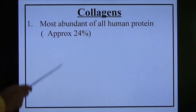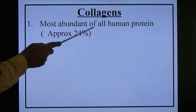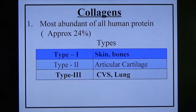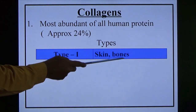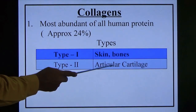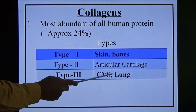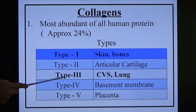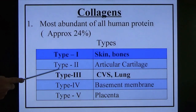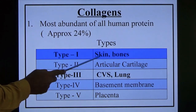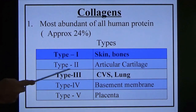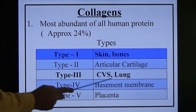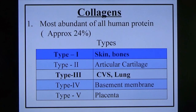Collagen fibers: the most abundant protein in the human body — approximately 24% of all body protein is collagen. There are five types. Type one: most abundant. Type two: present in articular cartilage. Type three: present in the cardiovascular system and lungs. Type four: present in the basement membrane. Type five: in the placenta. Please remember — type three collagen is what granulation tissue forms first. For example, if skin (normally type one collagen) is injured, the fresh granulation tissue is made up of type three collagen. All granulation tissue is made up of type three collagen, and later type one collagen. This is very important for MCQs.